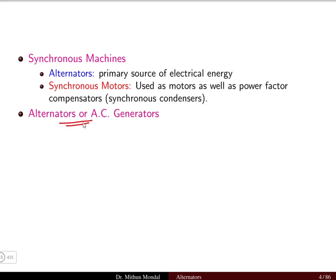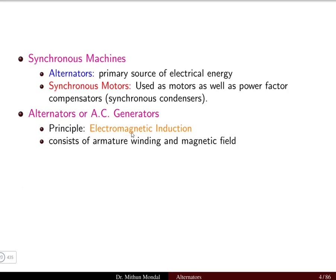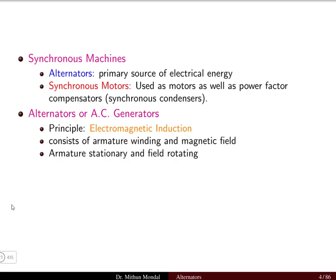Now let us discuss the alternator or AC generator. Its principle of operation is electromagnetic induction. It consists of armature winding and a magnetic field, since EMF can be produced only when a conductor is placed in a magnetic field. The armature is stationary whereas the field is rotating or revolving.